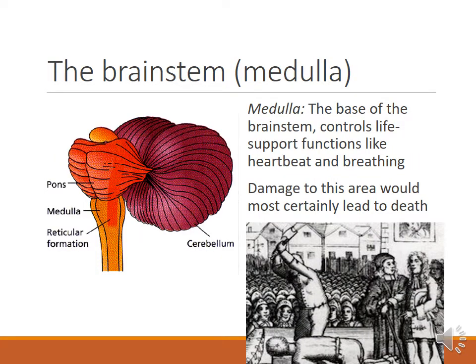Let's start with the medulla. I remember the medulla by thinking of medieval death — a long time ago, the best way to kill somebody would be to chop off their head at the base of the skull, right at the neck. Your medulla is right at the base where the spinal column meets the brainstem. Damage to this area would shut down your ability to breathe, sneeze, cough, and circulate your blood — not being able to breathe or circulate your blood would certainly be instantaneous death.